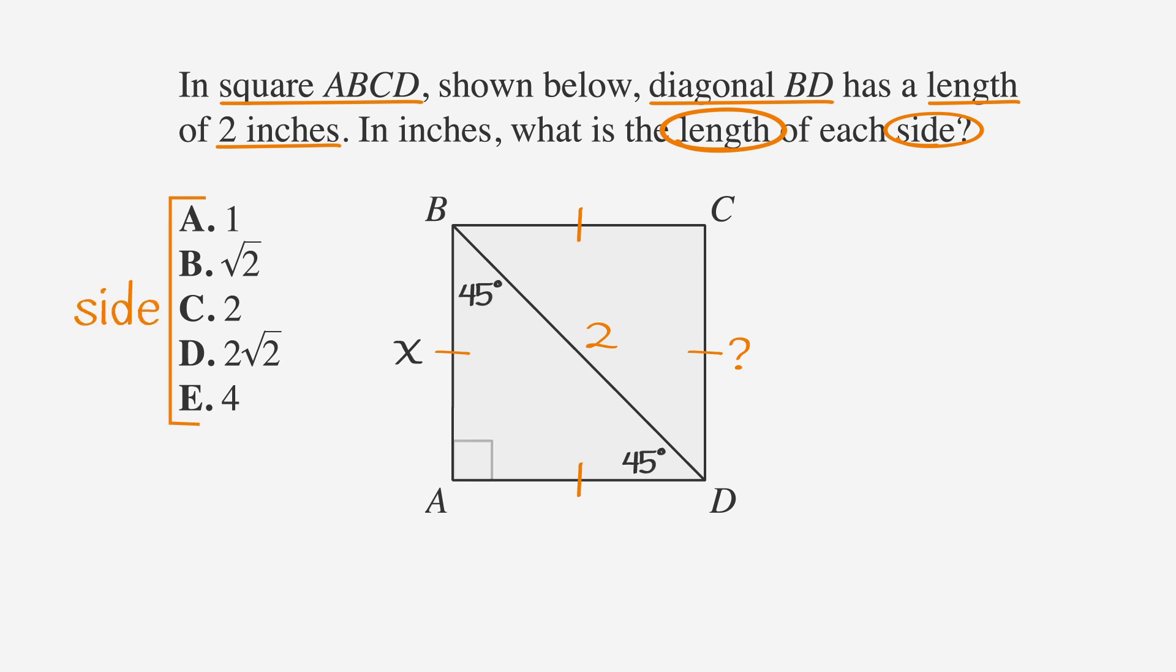Looking out for 45-45-90 triangles in squares, we can see two 45-45-90 triangles in this figure. Since diagonal BD is 2, that means that in our 45-45-90 triangle, the hypotenuse is 2.